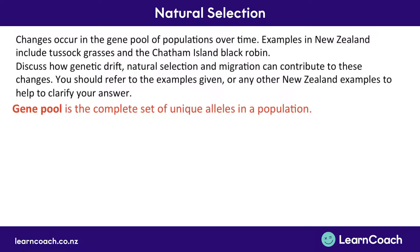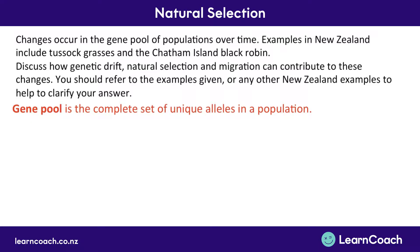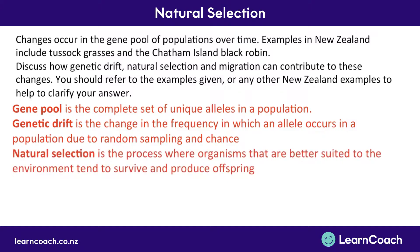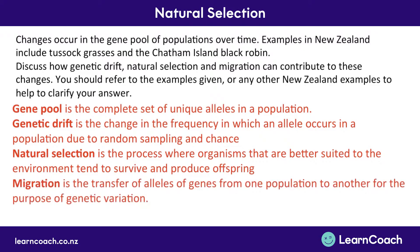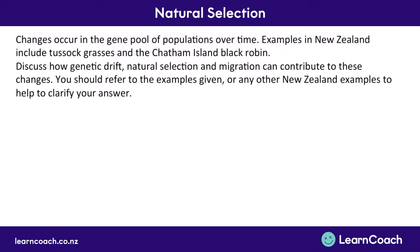First, let's define our terms. The gene pool is all the alleles in a population. Genetic drift, from the last video, talks about random chance and how often certain alleles get expressed. Natural selection is when organisms better suited to an environment tend to survive and produce offspring. Migration is the transfer of alleles from one population to another, contributing to genetic variation.